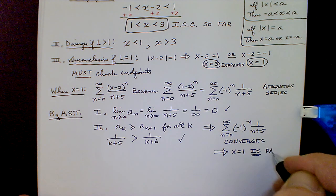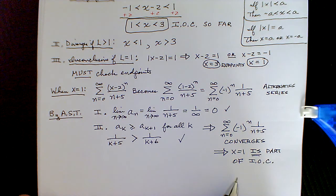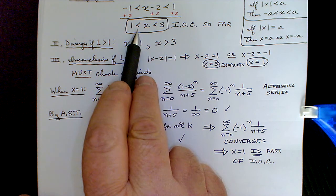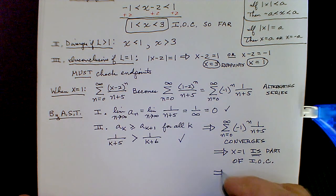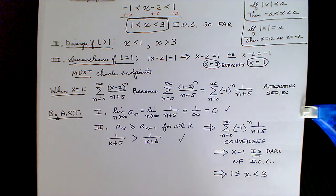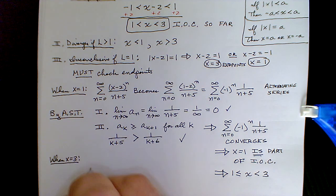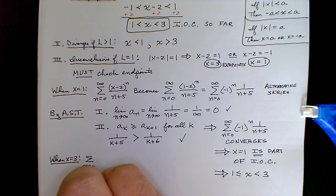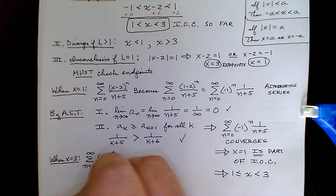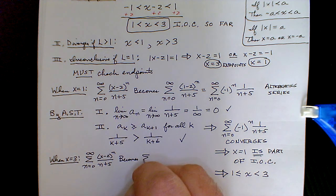Since x equals one is included, the interval of convergence becomes one less than or equal to x less than three. Now we need to test x equals three. When x equals three, the original series becomes the sum as n goes from zero to infinity of three minus two to the nth over n plus five.